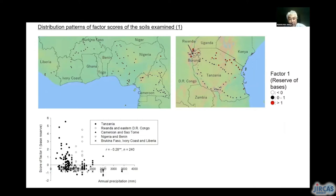As shown in the upper figure, the reserve bases are high in northern Tanzania to Rwanda. A drier climate may partially explain this trend, and relatively young parent materials in the hilly area are an additional reason.